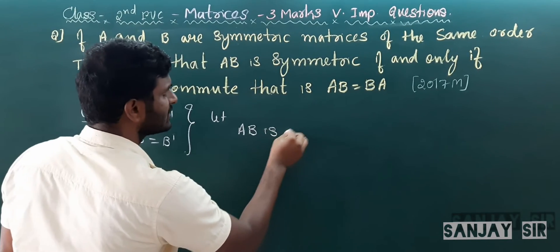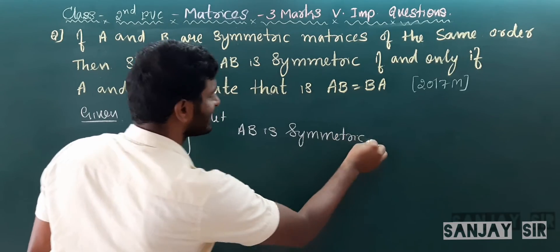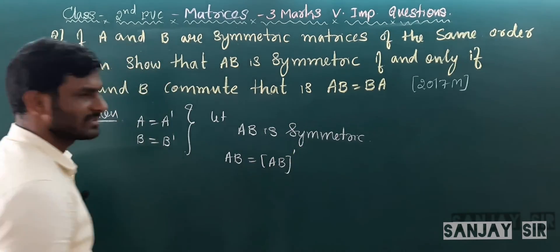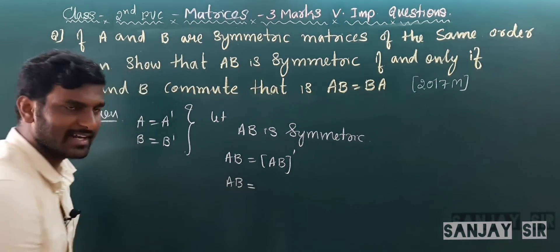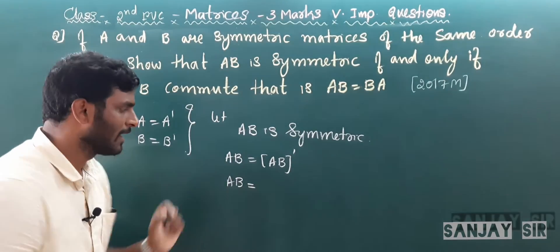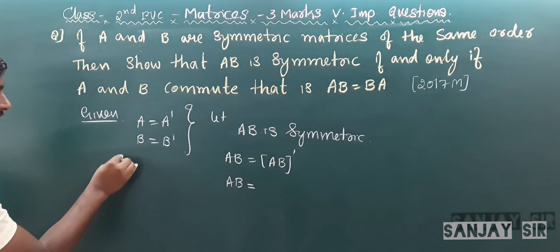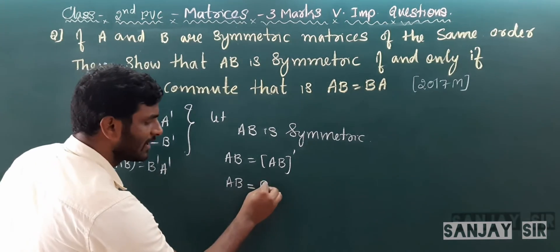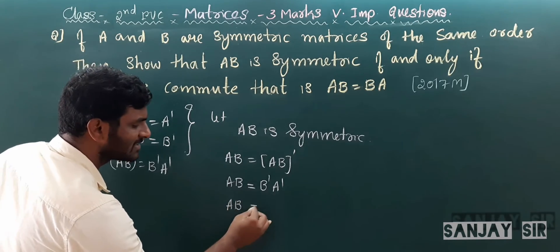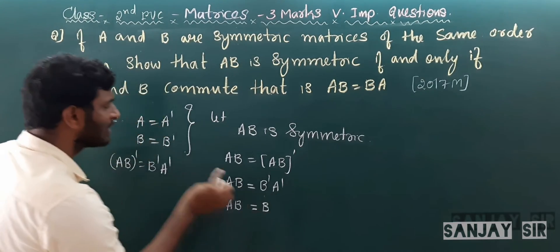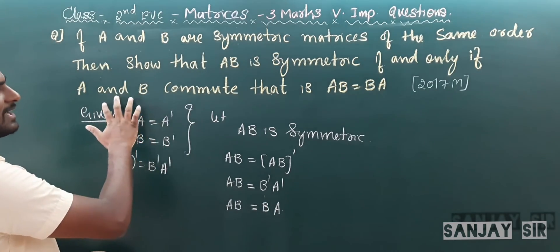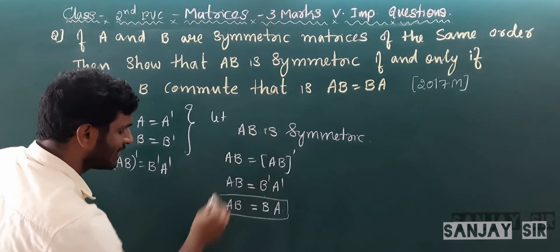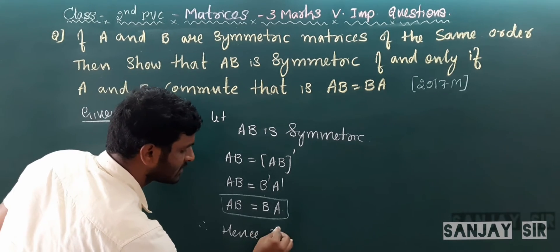Forward direction: Let AB be symmetric. AB symmetric means AB = (AB)'. By the property of transpose, (AB)' = B' · A'. Substituting the given conditions, B' = B and A' = A, so (AB)' = B · A = BA. Hence AB = BA, meaning A and B commute. Hence it is proved.